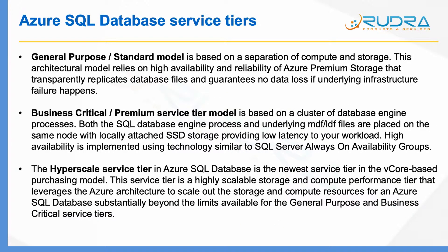The next thing is service types. Each purchasing model will have service types under it. In the vCore purchasing model, they are called general purpose, business critical, and hyperscale service types. And when it comes to the DTU model, they are called standard and premium service types. There is also something called basic in the DTU model.